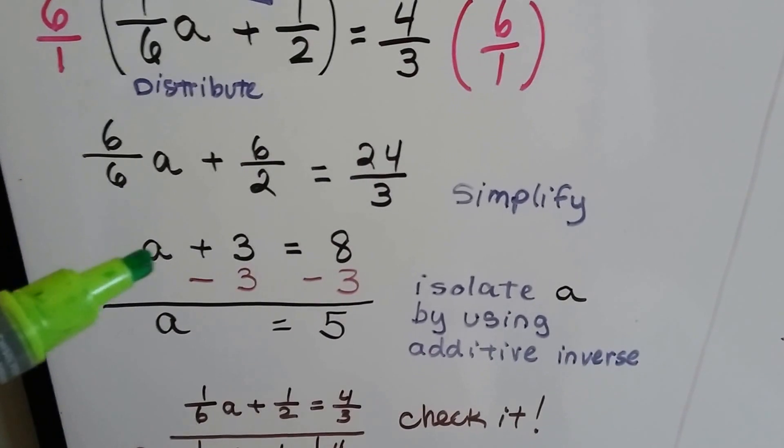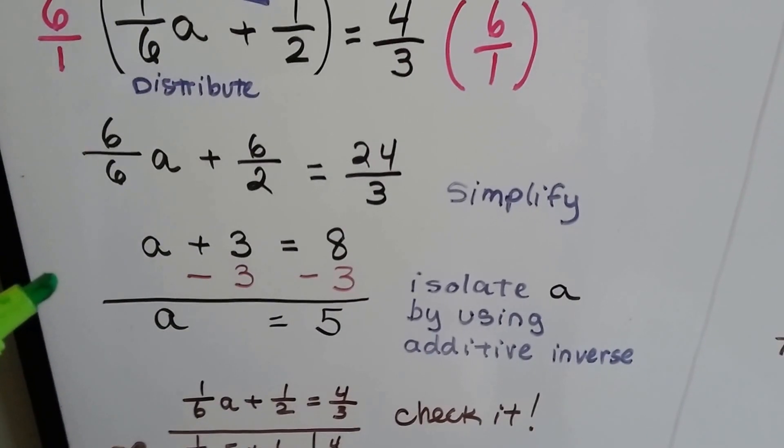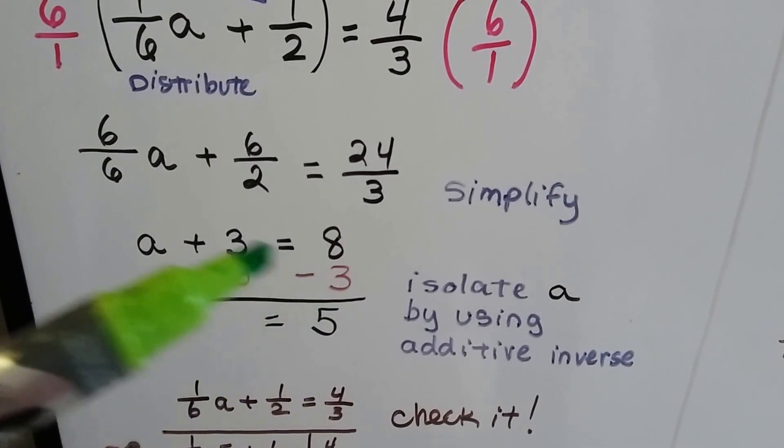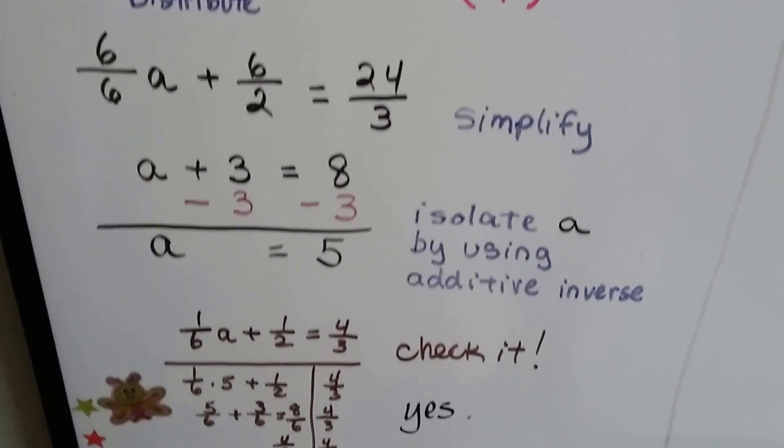So now we have a plus 3 equals 8, and we can isolate a using additive inverses. That's the addition property of equality, and we can subtract 3 from both sides of the equation and get a equals 5.